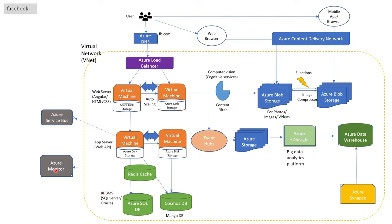Up to here we have covered the services doing the actual work. Now we will cover some services which will make the virtual network secure. The first is Azure Active Directory — a Microsoft cloud-based identity and access management service which helps your developers and admins to sign in and access all these resources. What resource is available to which developer can be decided by this service. In short, it does authentication and authorization.